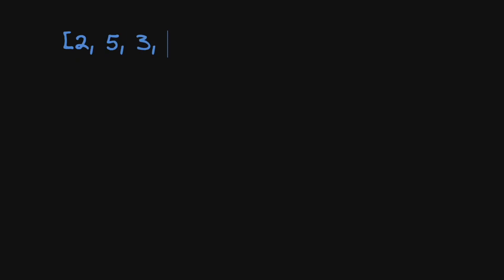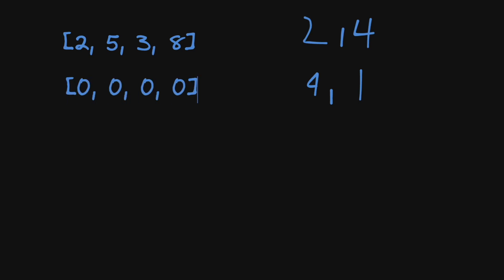Let's look at an example to see what this looks like in practice. Say we have an array with elements 2, 5, 3, and 8, and we issue the increment command to increment the first two elements by four, and also increment all four elements by one. We're going to store a separate array of the same length as the maximum size of the array. Each index in this array represents the number of increments that need to happen at that element — the first item represents how much to increment the first element, the second item represents how much to increment the second item, and so on.